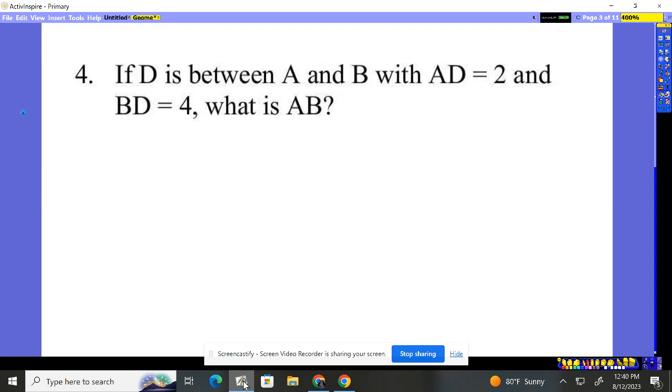Number four: If D is between A and B, that means the points are pretty much co-linear.